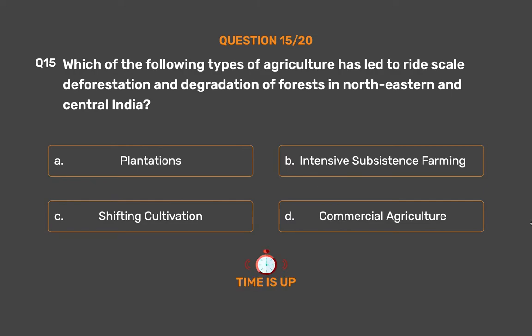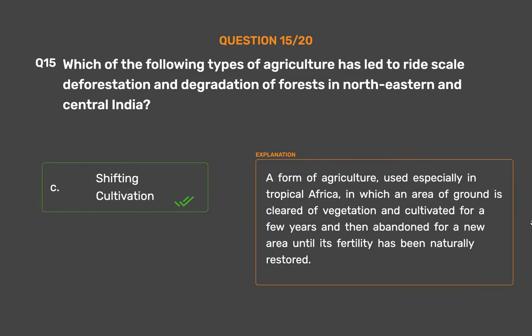The correct answer is Option C: Shifting cultivation. It is a form of agriculture used especially in tropical Africa in which an area of ground is cleared of vegetation and cultivated for a few years, then abandoned for a new area until its fertility has been naturally restored.